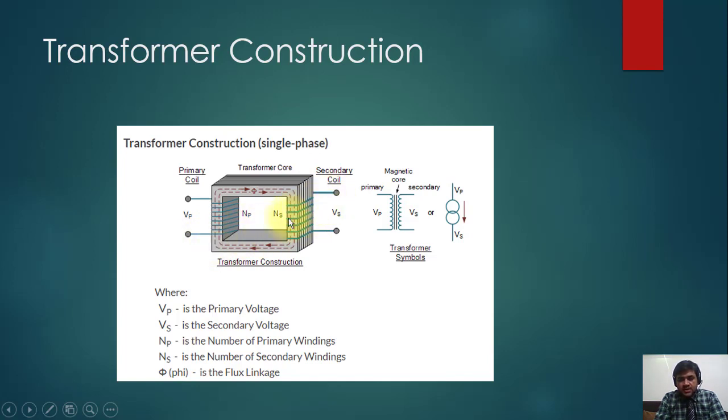The bulb will not glow because this is not electrically connected. If it's electrically connected, the bulb will glow. It is magnetically connected. So what is this transformer doing? It is basically providing—I'm telling you a very interesting thing now—